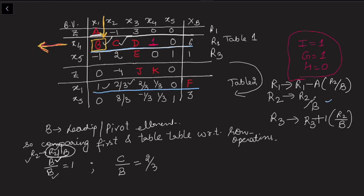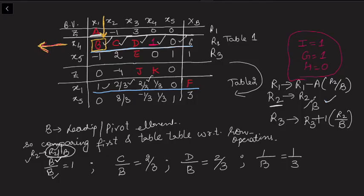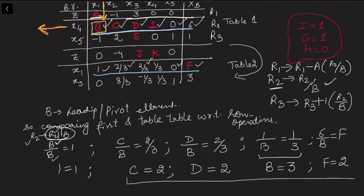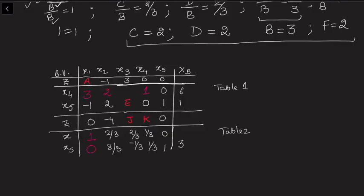Continuing with the r2 row operation: d/b gives 2/3, then 1/b equals 1/3, and 0/b equals 0. Finally, 6/b equals f. From 1/b = 1/3, we get b = 3. Once b = 3, we find d = 2 and c = 2. And since 6/b = 6/3, f = 2. So we have now found entries b=3, c=2, d=2, and f=2.